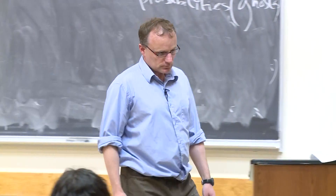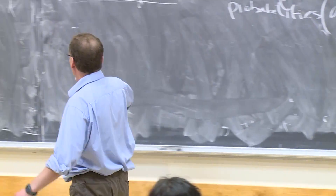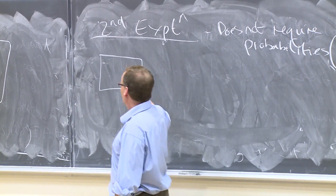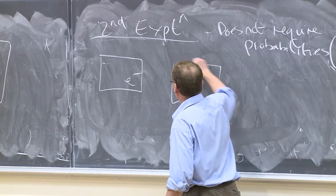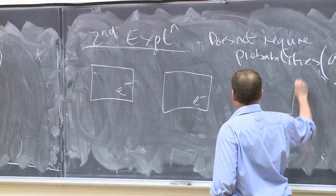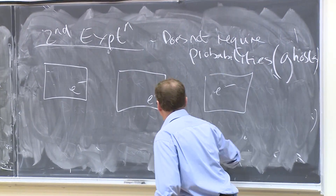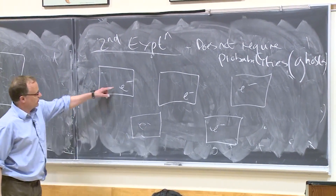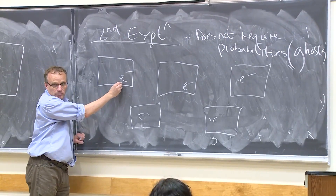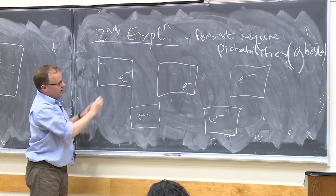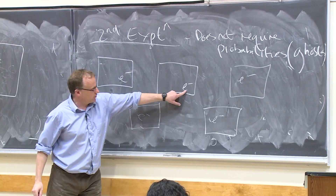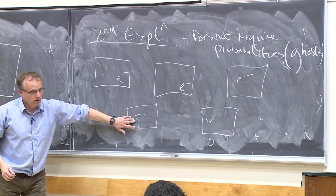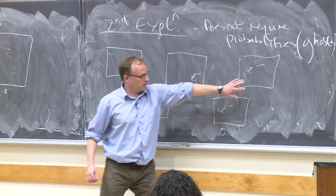Everything's real. The problem with the second explanation is you need an infinite number of universes. So instead of having one universe, you have all these universes. And in each universe the electron is real and is at a certain point. So in our universe it would be here, in another universe it would be here or go through hole A, go through hole B. Another universe it's here, another universe it's here, another universe it's here.